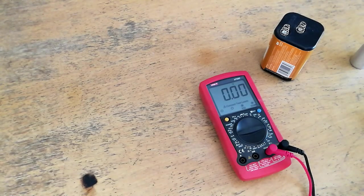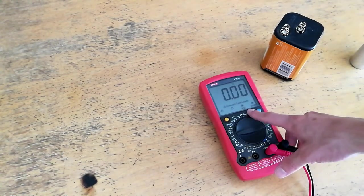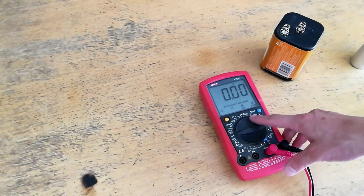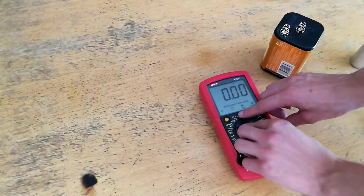When you're using the current measuring settings on either of the multimeters, you always want to make sure there's some sort of a resistive element between the battery and the multimeter, otherwise the fuse will blow.